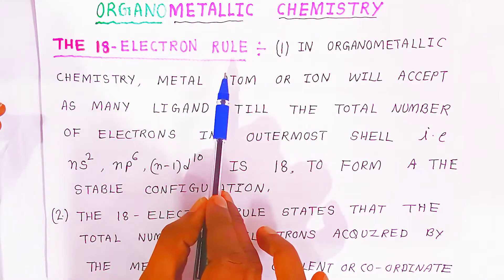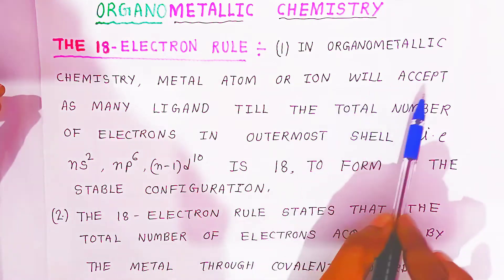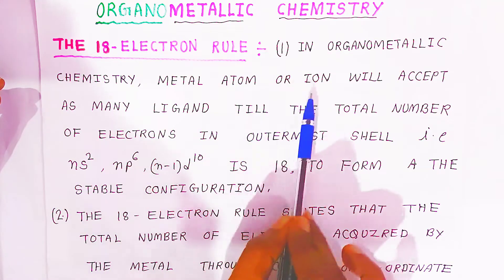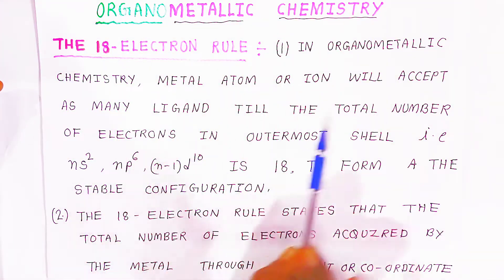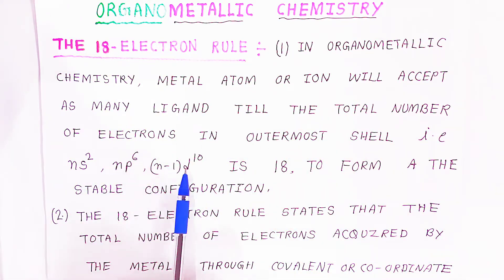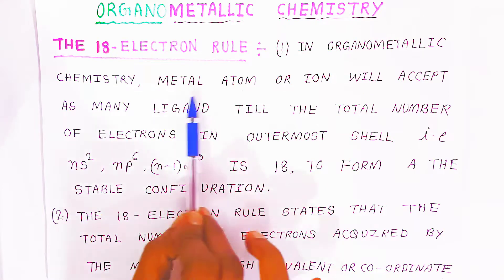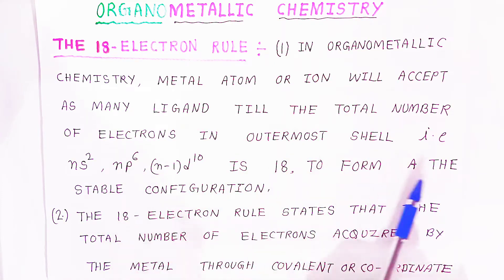What is the 18 electron rule? In organometallic chemistry, a metal atom or ion will accept as many ligands until the total number of electrons in the outermost shell is 18, to form a stable configuration.